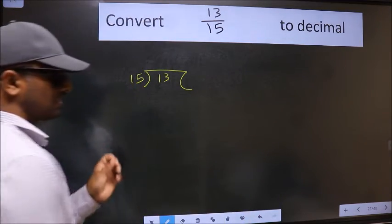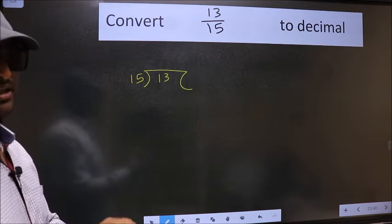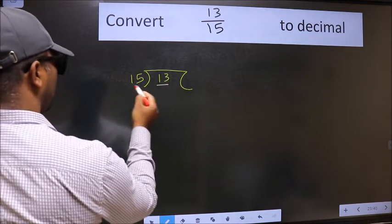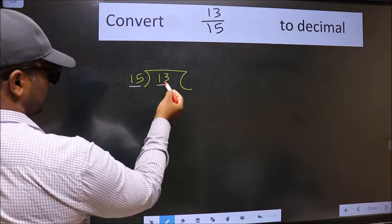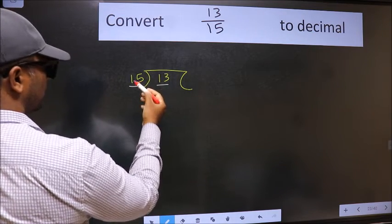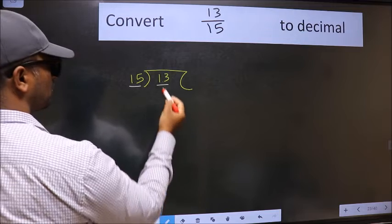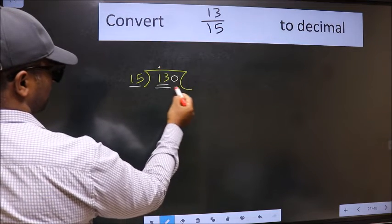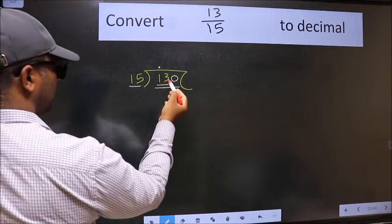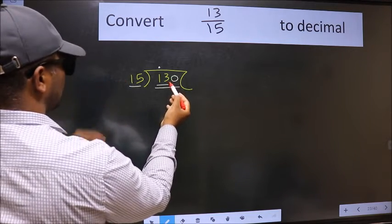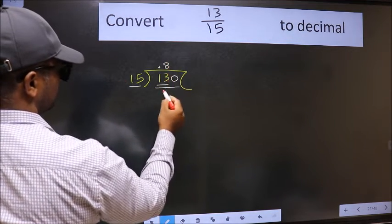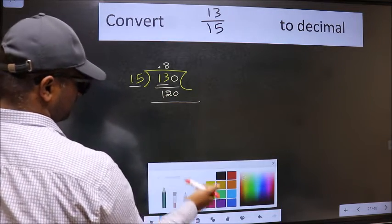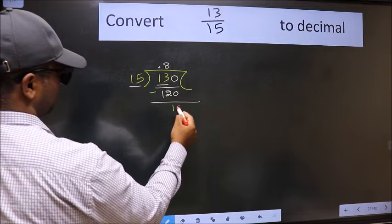This is your step 1. Here we have 13 and here 15. 13 is smaller than 15, so what we should do is put a dot and take 0. So 130. Our number close to 130 in the 15 times table is 15 eights, which is 120. Now we should subtract. We get 10.